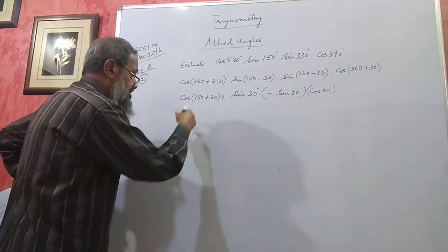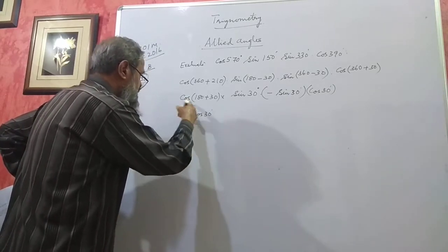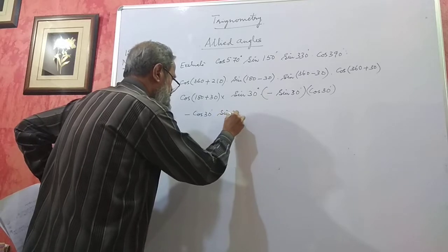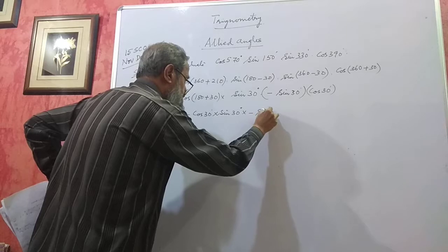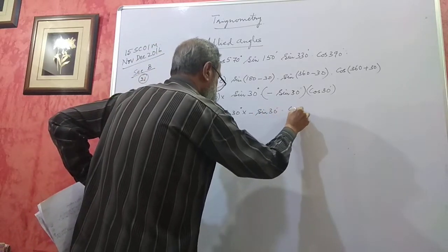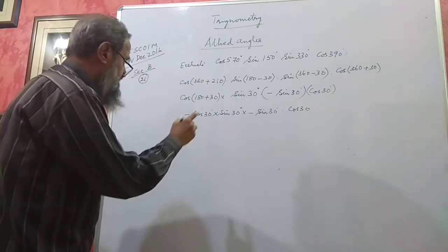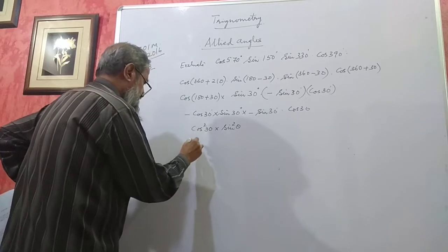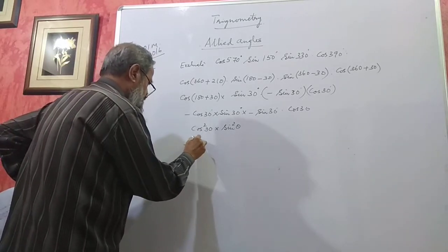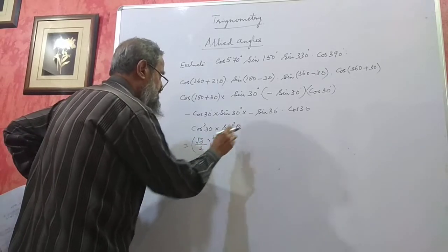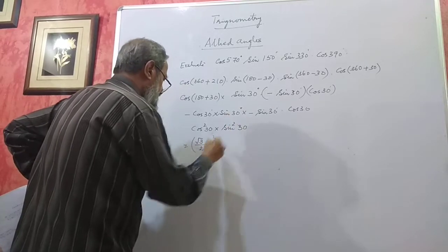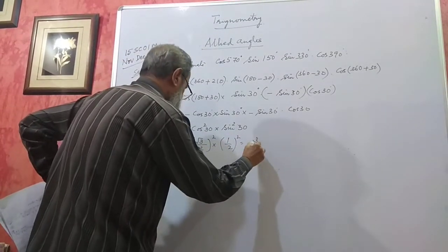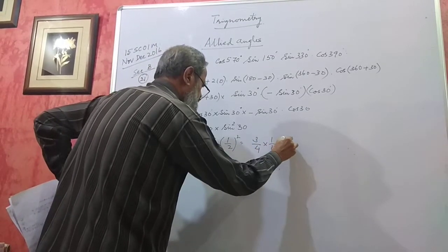Cos(180° + 30°) gives minus cos 30. Then minus sin 30 · minus sin 30 · cos 30: minus times minus becomes plus. So this is cos²30 · sin²30. Cos 30 = √3/2, so cos²30 = 3/4. Sin 30 = 1/2, so sin²30 = 1/4. This gives 3/4 × 1/4 = 3/16. That is the value.